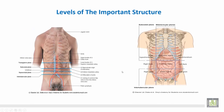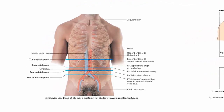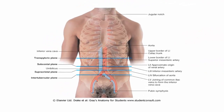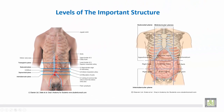These are the important structures: the beginning of the inferior vena cava opposite the fifth lumbar vertebra, and the bifurcation of the abdominal aorta opposite the fourth lumbar vertebra.